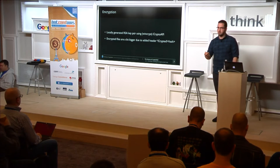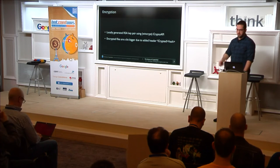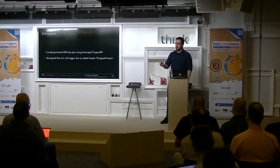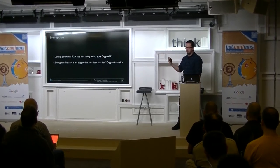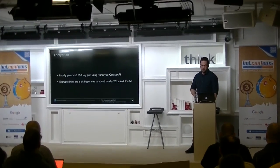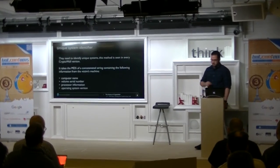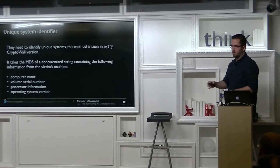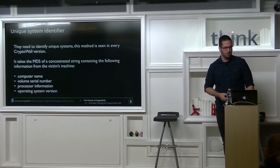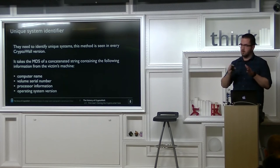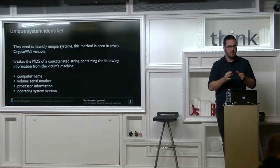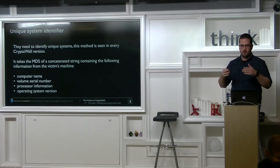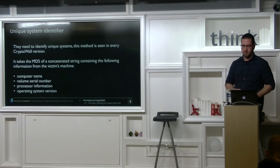Encryption at the time: they locally generated an RSA key pair with WinCrypt, the Windows Crypto API. Files they would encrypt were slightly larger because they added a small tag so they could find back the files. They added a checksum hash from the file when it was decrypted so you could confirm if it was correctly decrypted. Everything was local, even the private key. To identify systems, they used a unique system ID — a concatenation of the computer name, volume serial number, processor information, and OS version, MD5-hashed in hex notation. This allowed them to identify multiple systems behind a single IP.